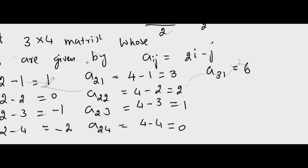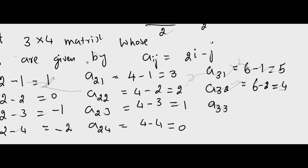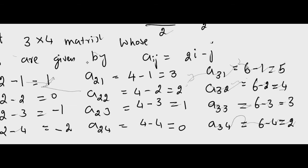A31 equals 6 minus 1 which is 5. A32 equals 6 minus 2 which is 4. A33 equals 6 minus 3 which is 3.